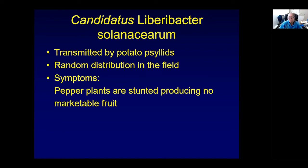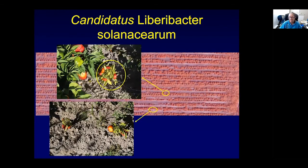One example is Liberibacter, a non-culturable bacterium transmitted by insects that causes random distribution of infected plants in a field. The example I have shows pepper plants that are very stunted and will produce no marketable fruit. These are normal-sized pepper plants, and then the one in the circle is the infected plant — just a tiny dot in the middle between the healthy plants. If you fly your drone and see these discrepancies, you can go to those plants and investigate the problem.